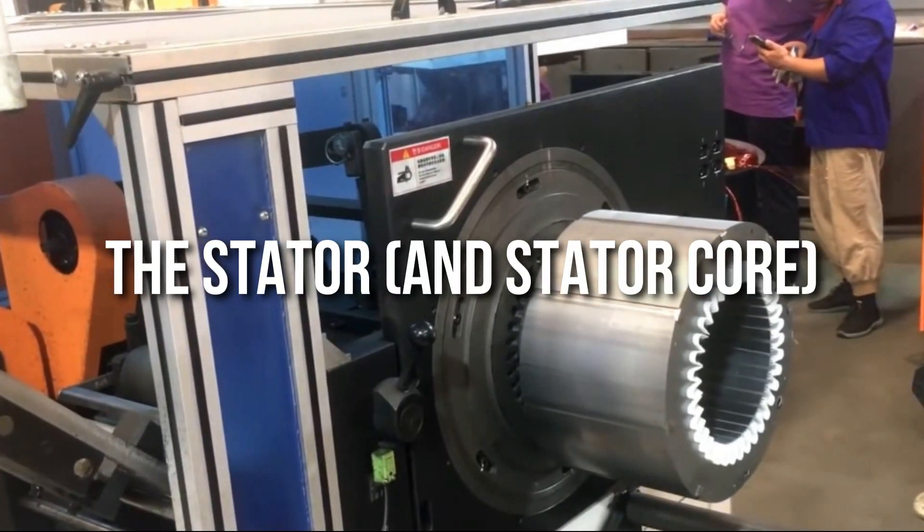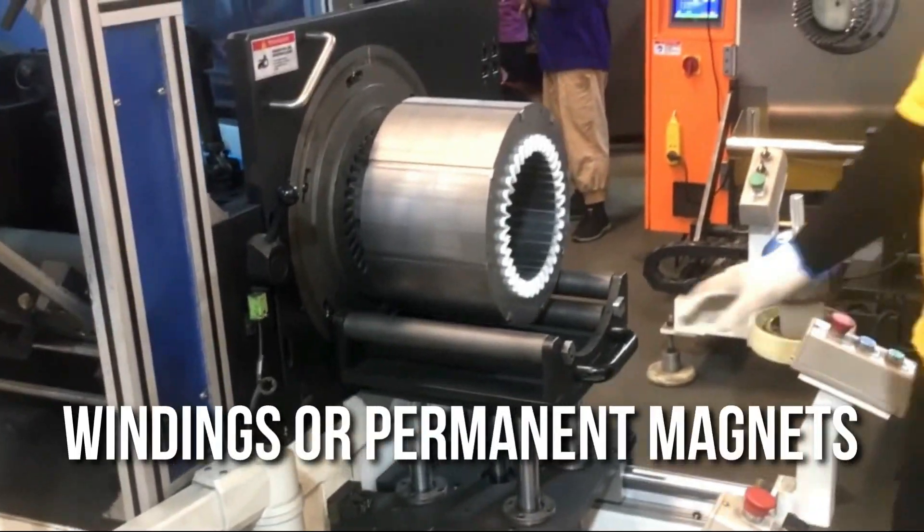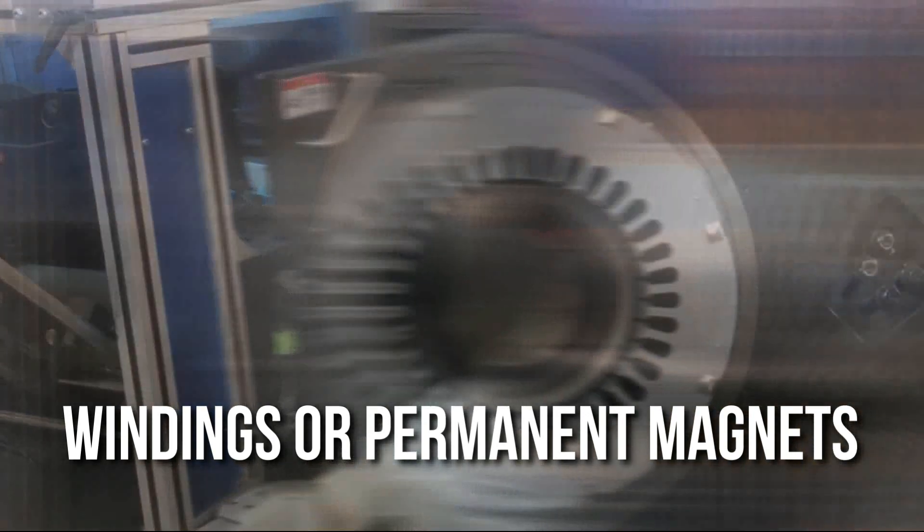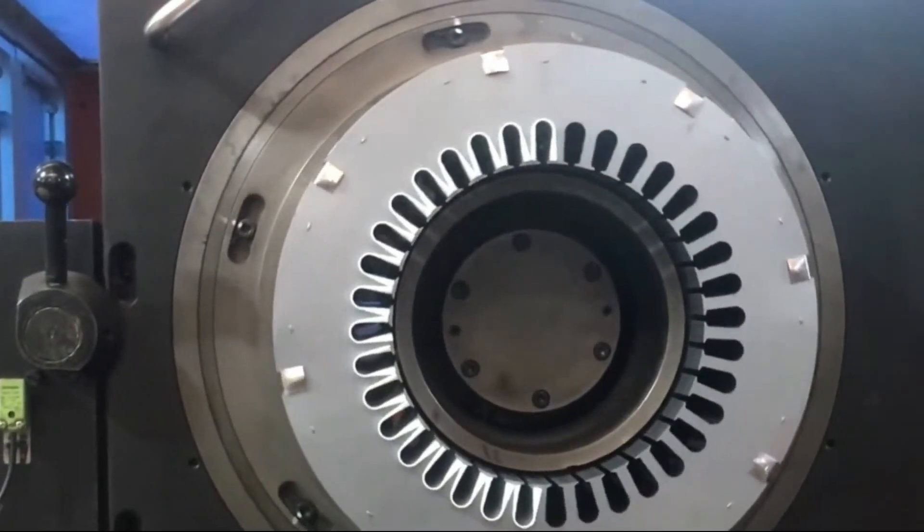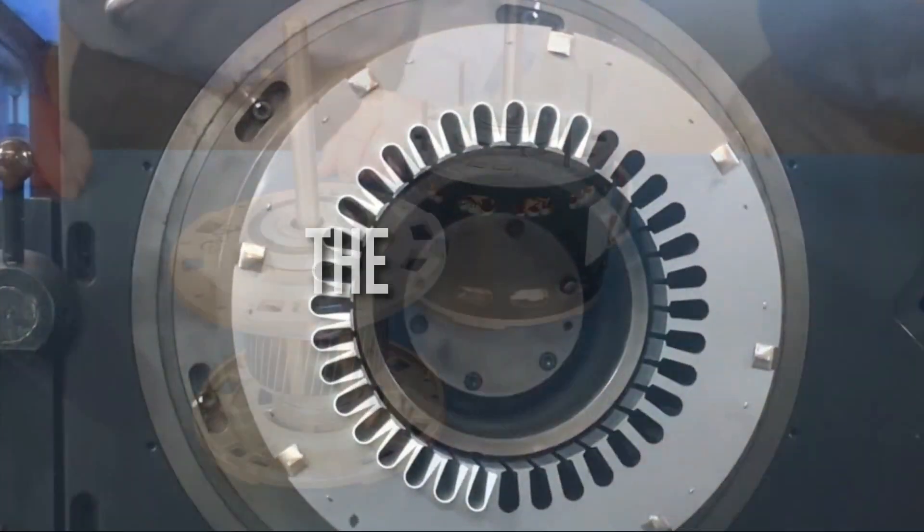The stator and stator core. The stator is the fixed part of the motor's electromagnetic circuit and usually consists of windings or permanent magnets. The stator core is made up of many thin metal sheets called laminations. Laminations are used to reduce the energy loss that would occur if a solid core were used.